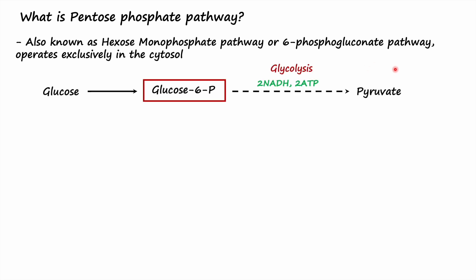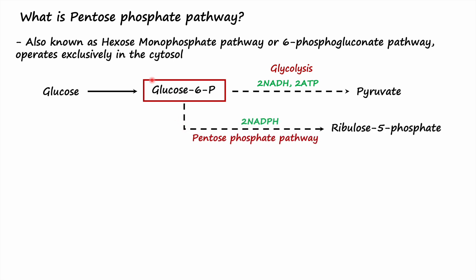The pentose phosphate pathway is another means by which cells oxidize glucose. In glycolysis, glucose is oxidized to generate ATP, NADH, and pyruvate, whereas the pentose phosphate pathway branches from glycolysis at the level of glucose 6-phosphate. That is why it is called the hexose monophosphate pathway, because glucose 6-phosphate is a 6-carbon molecule, also called a hexose.